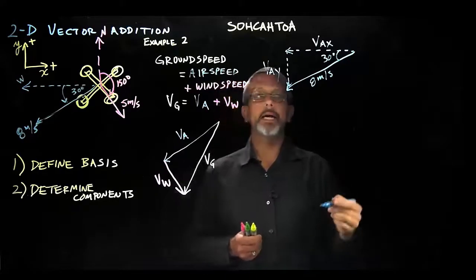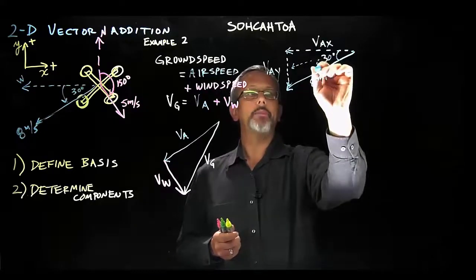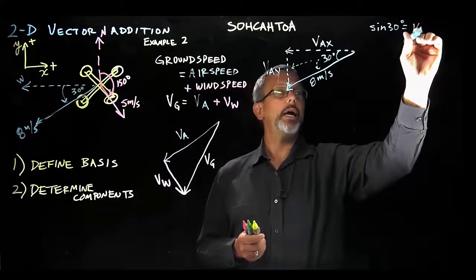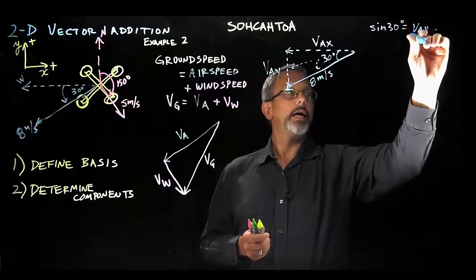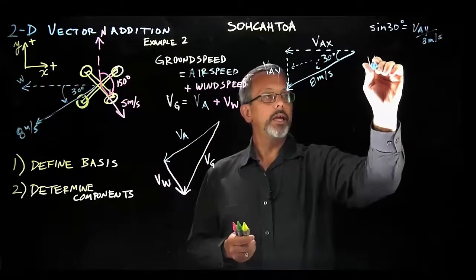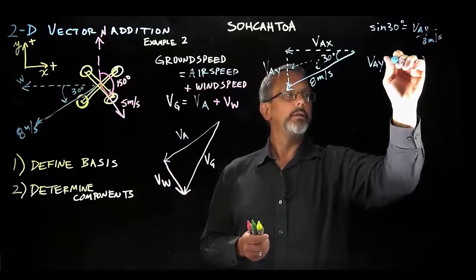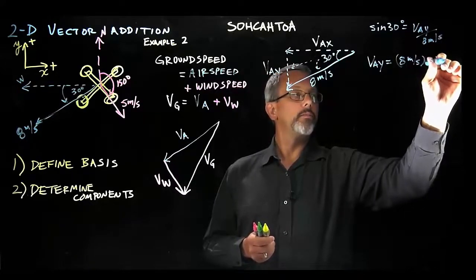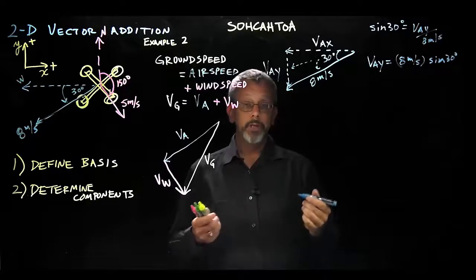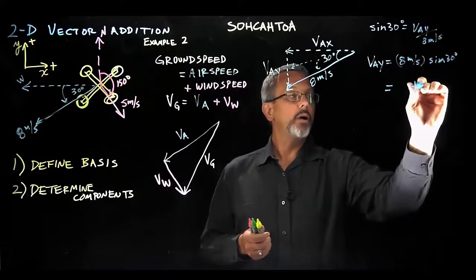Revisiting trigonometry using SOHCAHTOA, we identify relationships between VAx, VAy, and the hypotenuse of 8 meters per second. The sine of the angle gives the y component over the hypotenuse: sine of 30 degrees equals VAy divided by 8 meters per second. Solving, VAy equals 8 meters per second times sine of 30 degrees. Sine of 30 degrees is one half, so VAy equals 4 meters per second.